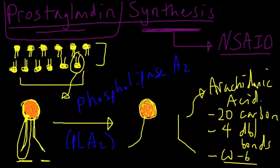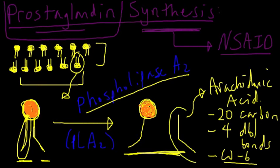So phospholipase A2 will catalyze the cleavage of a phospholipid into its two components, one of which is a key precursor to the prostaglandin synthetic pathway.